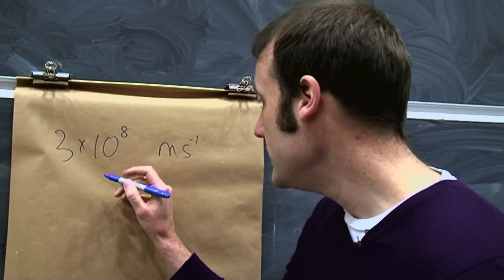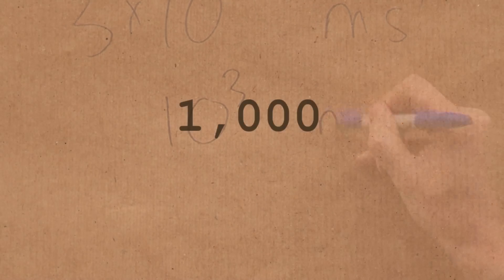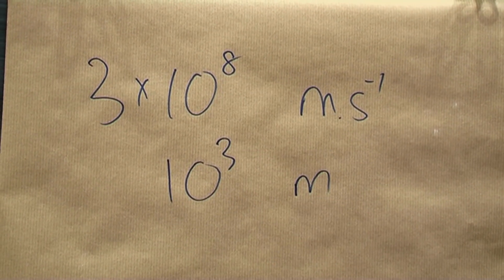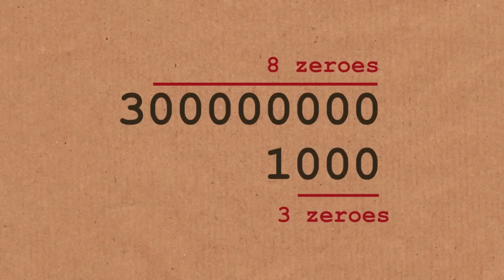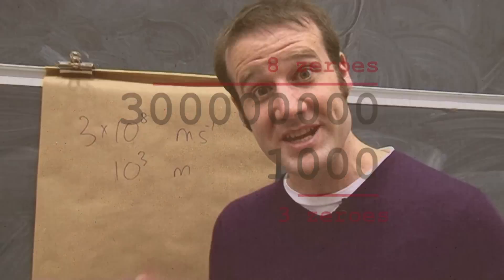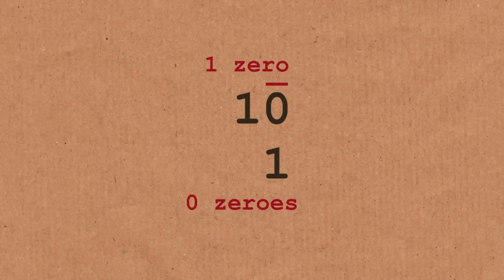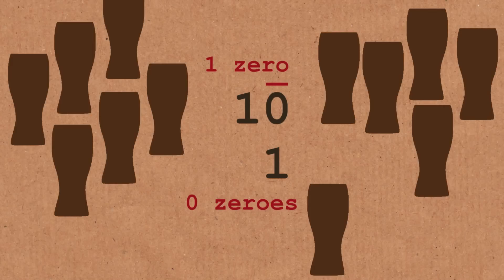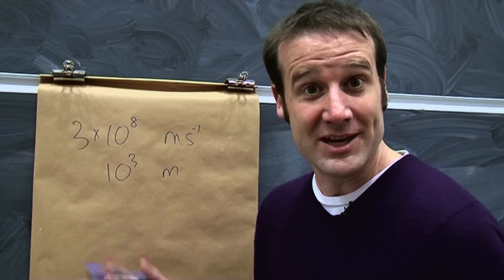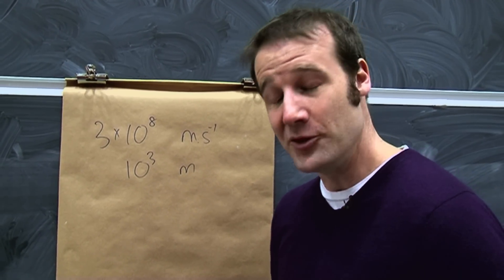And something like a kilometre is ten to the three metres. So light in one second goes five orders of magnitude further than a kilometre. And so when he says I want ten times as many drinks, he's actually ordering one order of magnitude more than anyone else, which is of course an order of magnitude.